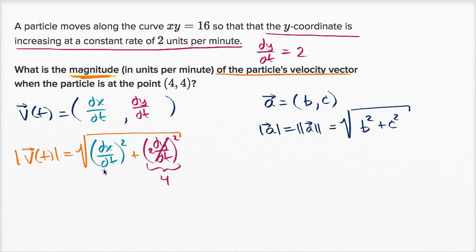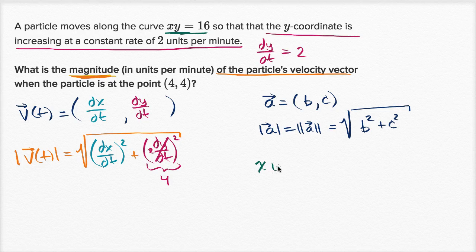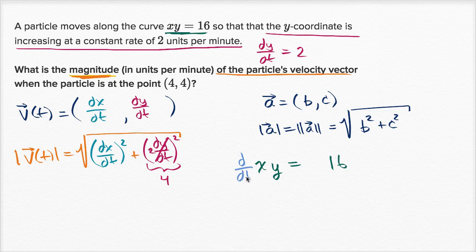How do we figure out the rate of change of x with respect to t? We can take our original equation that describes the curve, take the derivative of both sides with respect to t, and that will give us an equation involving x, y, dx/dt, and dy/dt. So we have xy equals 16, and we're going to take the derivative with respect to t of both sides. The left-hand side is the product of two functions, so we'll use the product rule and chain rule here.